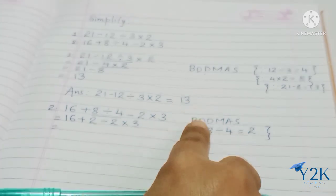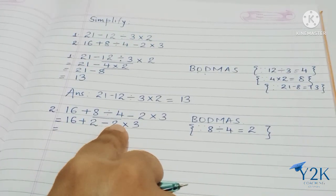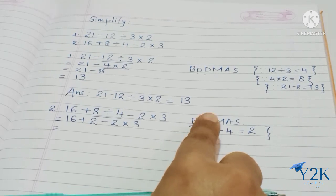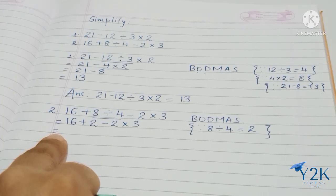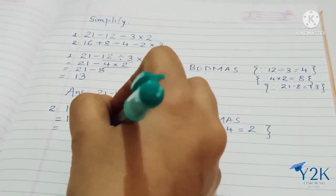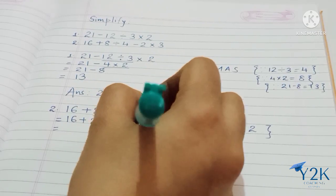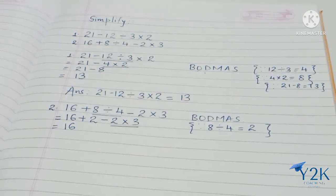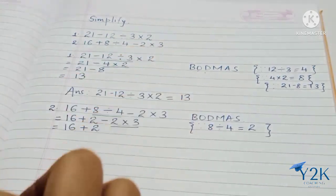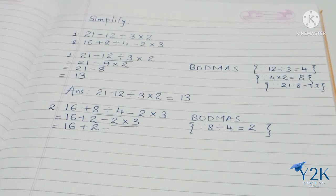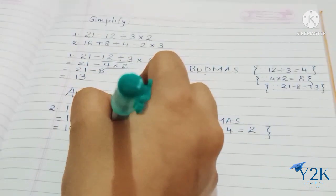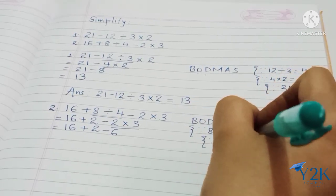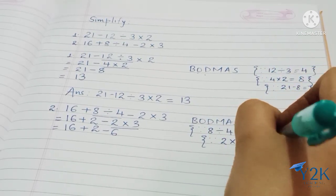Then the next step — again follow BODMAS. In the next step we have addition, subtraction, and multiplication. According to BODMAS, the operation which comes after division is multiplication. So in the next step we multiply 2 into 3. The remaining things we write as they are: 16 plus 2, and 2 multiplied by 3 gives the answer as 6. You can mention that 2 multiplied by 3 gives 6.